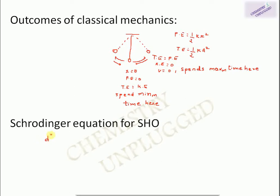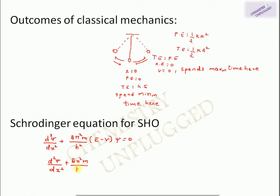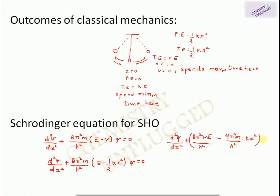Now we apply quantum mechanics using the time-independent Schrödinger equation: d²ψ/dx² + (8π²m/h²)(E − V)ψ = 0. Substituting the potential energy V = ½kx², this becomes d²ψ/dx² + (8π²mE/h² − 4π²mk x²/h²)ψ = 0. After making several assumptions and a lengthy calculation, the final wave function equation is obtained.